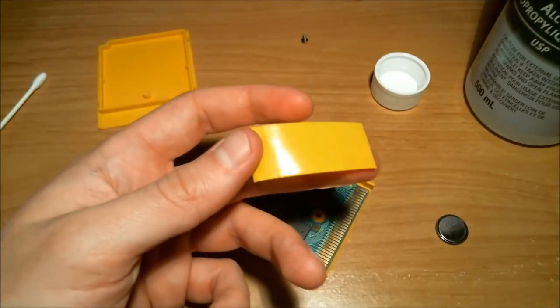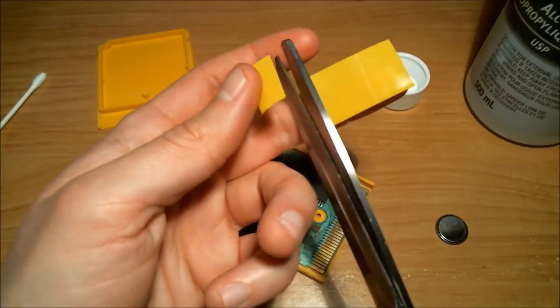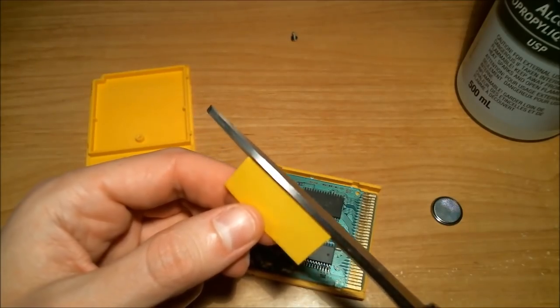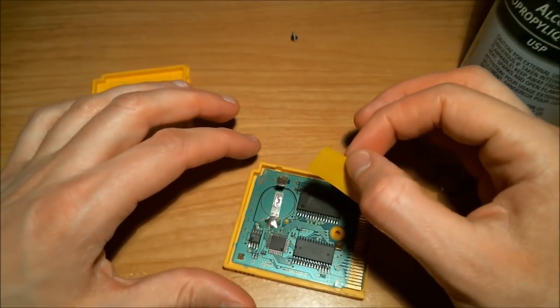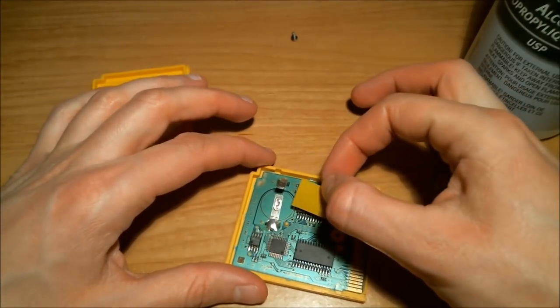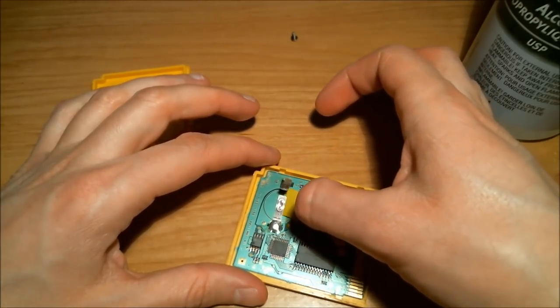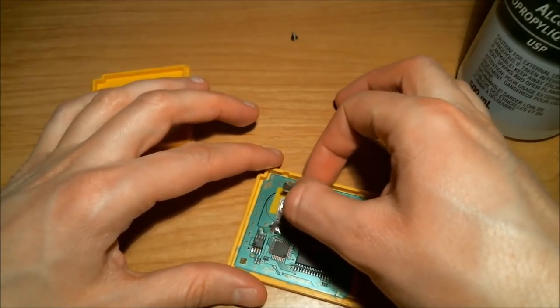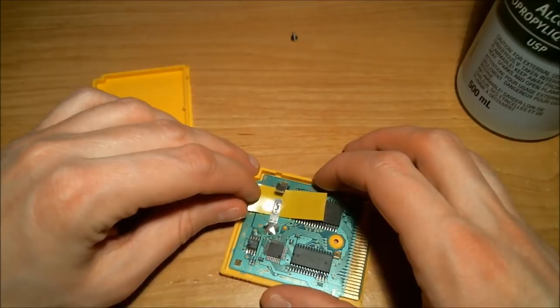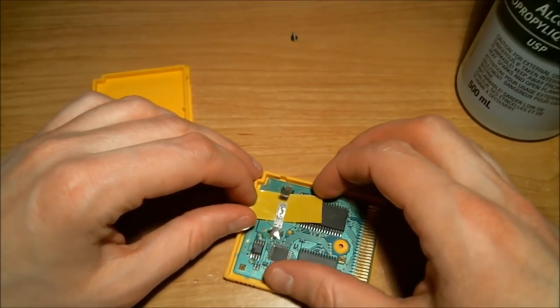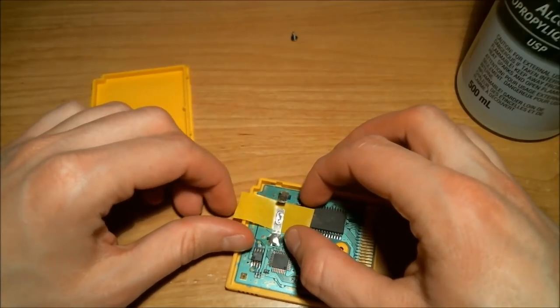Trim that down a little bit, I don't need quite that much. So now we're just going to slip this piece of electrical tape very carefully under this bottom tab here. Pull it through. There we go. Like so.